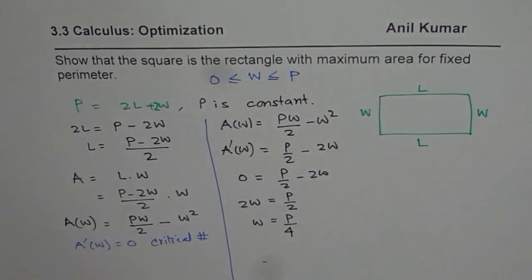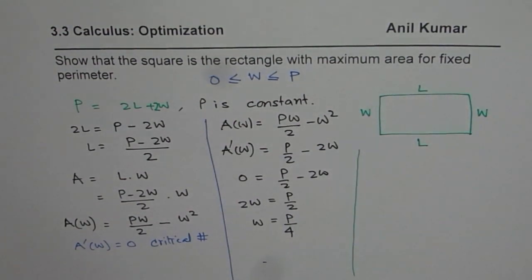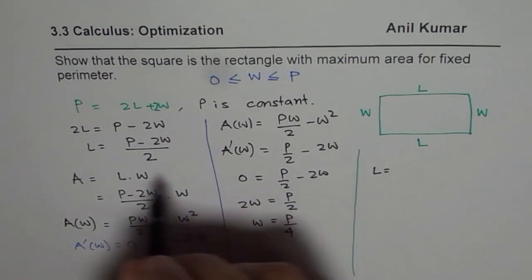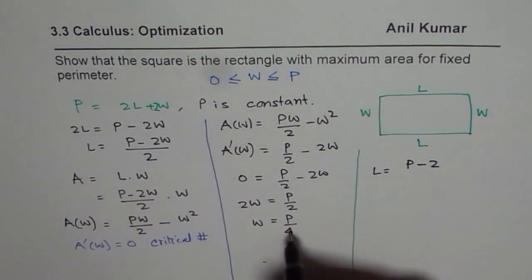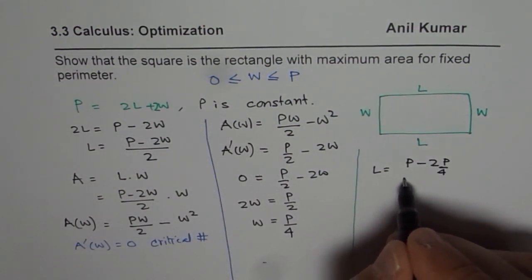Now if width is P over 4, what is length? Let us find out. Length equals perimeter minus 2 times width, width is P over 4. Divided by 2.